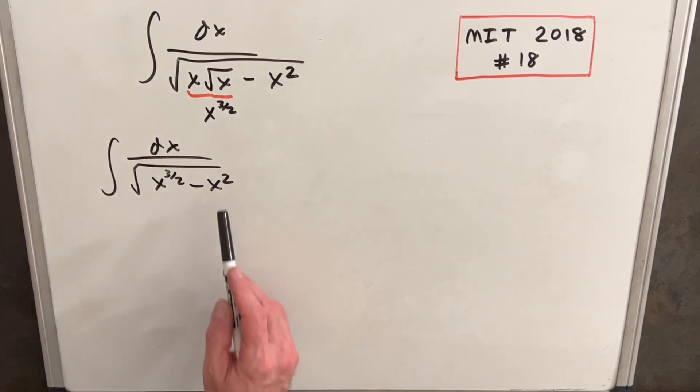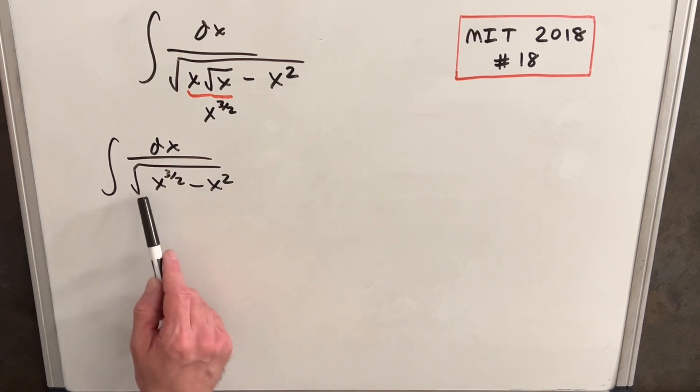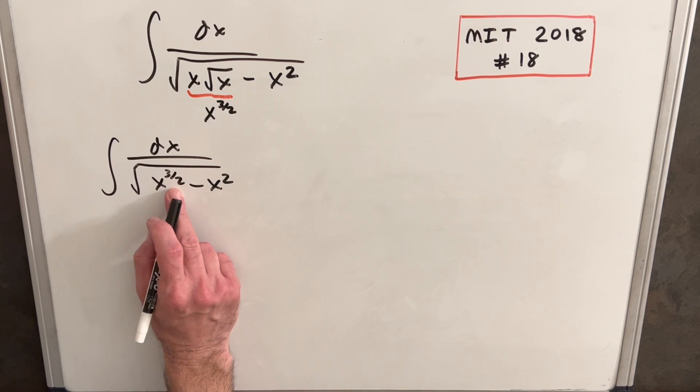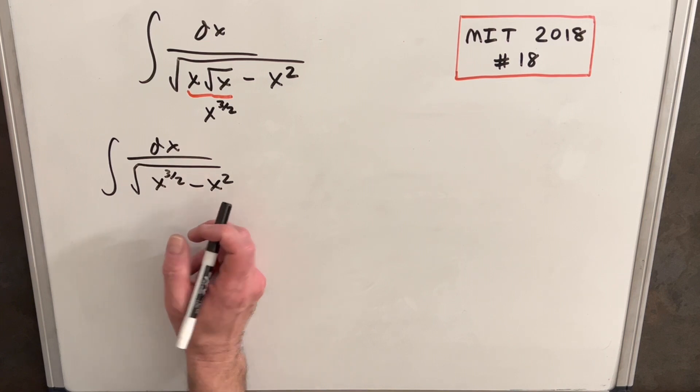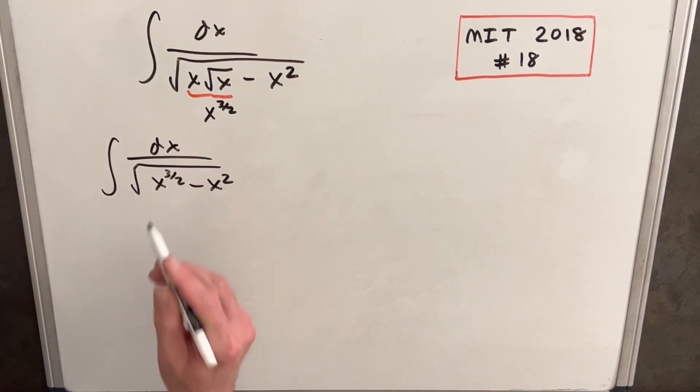Now you may want to factor out the x squared. So the problem with that is when you factor that out, you're just going to have an x to the 1 out here. If we're going to do a u substitution here, if we have a u substitution where our u is a fraction exponent, the du is also going to have a fraction exponent. If the u is an integer exponent, the derivative also is an integer exponent. So what we need to do is factor out this piece.